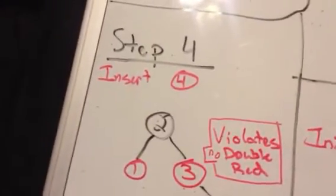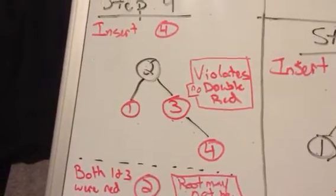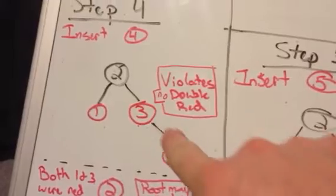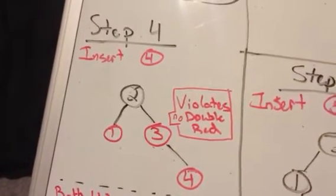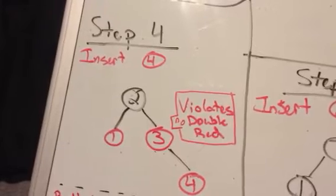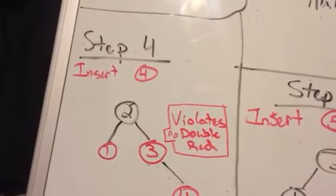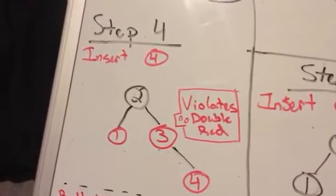If we go to 4, we can see that it violates two double reds, right here. So, because it violates those two, we have to do some kind of conversion to make sure that it becomes a valid RBT.